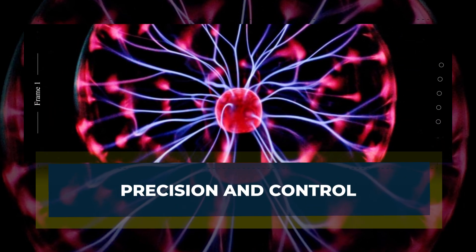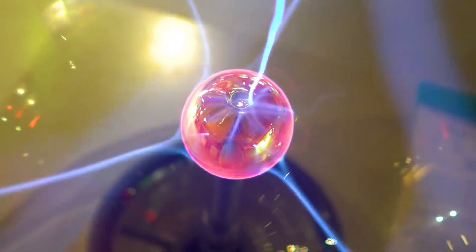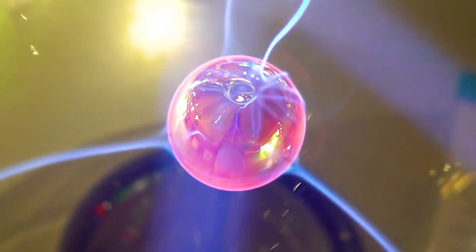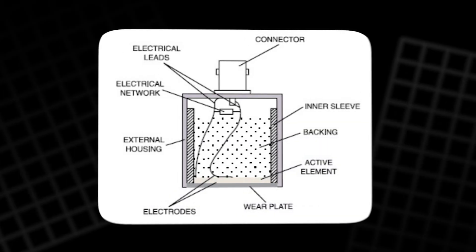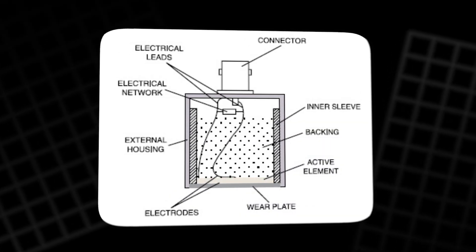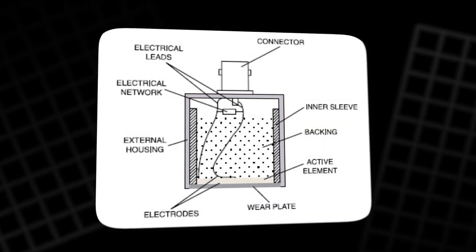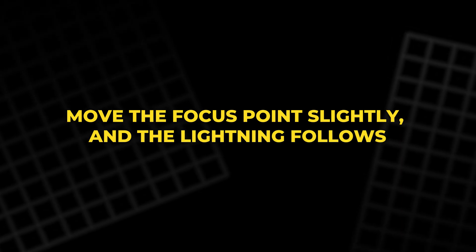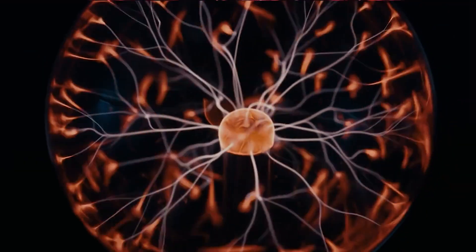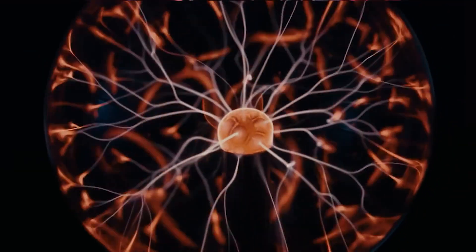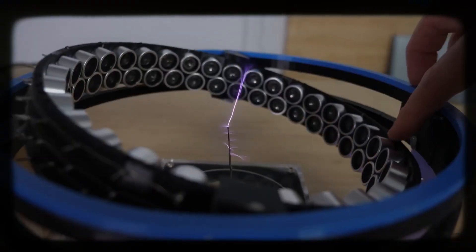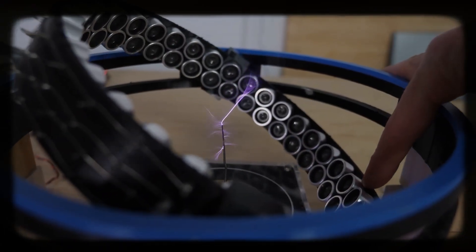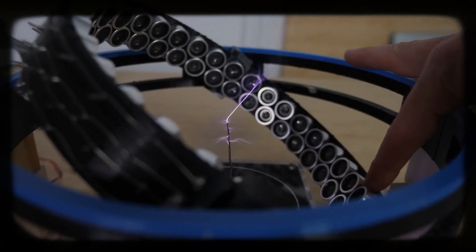Precision and control: Once the plasma is under control, the possibilities expand. By adjusting where the ultrasonic transducers sit, or how their phases are tuned, scientists can steer the plasma path in different directions. Move the focus point slightly, and the lightning follows. Shift the pattern, and the plasma curves around obstacles. This precise control allows electricity to travel through the air in ways never seen before.